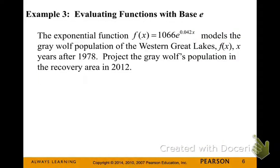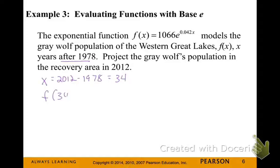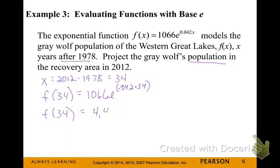Example 3: The exponential function F(x) = 1,066 × e^(0.042x) models the gray wolf population of the Western Great Lakes, where x is years after 1978. We're going to project the gray wolf population in 2012. That's 34 years after 1978, so we plug in 34 for x. The estimate of the gray wolf population will be around 4,446 wolves.